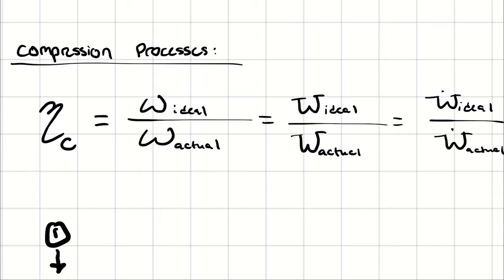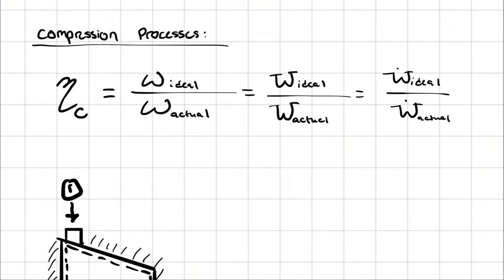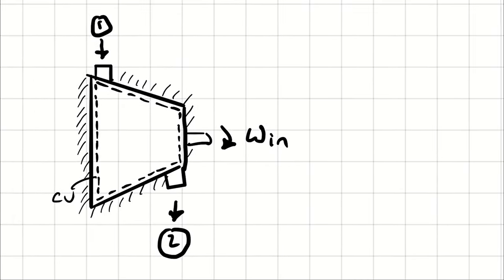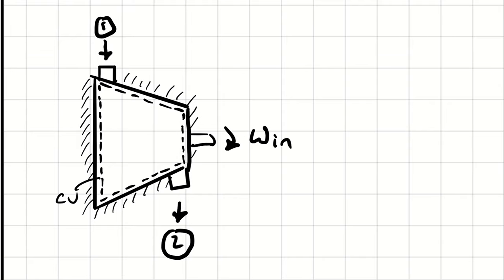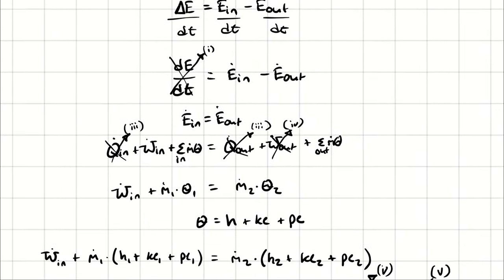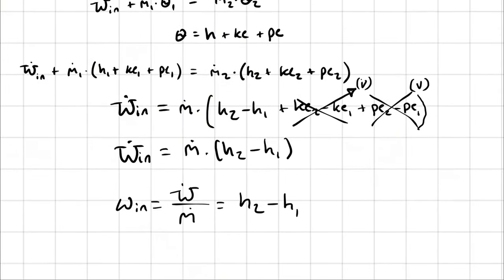To figure out what to plug in for the specific work for the actual and ideal basis, let's consider an energy balance. For an energy balance on a compressor, if I'm assuming everything is perfect, I have an adiabatic process, because delta S of the surroundings is also going to be 0. Then, I have the work in is equal to H2 minus H1.